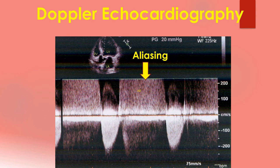In such situations, continuous wave Doppler with a higher velocity range is used. An intermediate option is HPRF or high pulse repetition frequency Doppler. The disadvantage of continuous wave is that it cannot pinpoint the exact location of the high velocity signal, as it is continuously transmitting and receiving the echo signal.